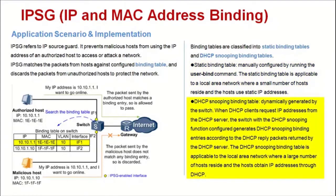A DHCP snooping binding table is dynamically generated by the switch. When DHCP clients request IP addresses from the DHCP server, the switch with the DHCP snooping function configured generates DHCP snooping binding entries according to the DHCP reply packets returned by the DHCP server. The DHCP snooping binding table is applicable to a local area network where a large number of hosts reside and the hosts obtain IP addresses through DHCP.